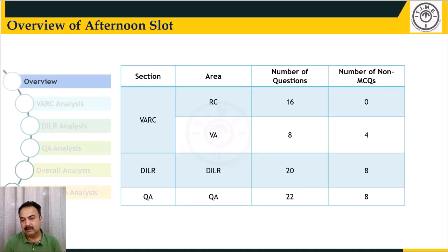So overall the paper was on expected lines in terms of the number of questions. In the VARC section you had RC and verbal, as usual similar to last year's paper, 4 passages, 4 questions, making 16 in RC and about 8 questions in verbal ability. DILR had 4 caselets with 5 questions each and Quant had 22 questions. The number of non-MCQ questions where you had to mark your answer in a box were also noted down separately.